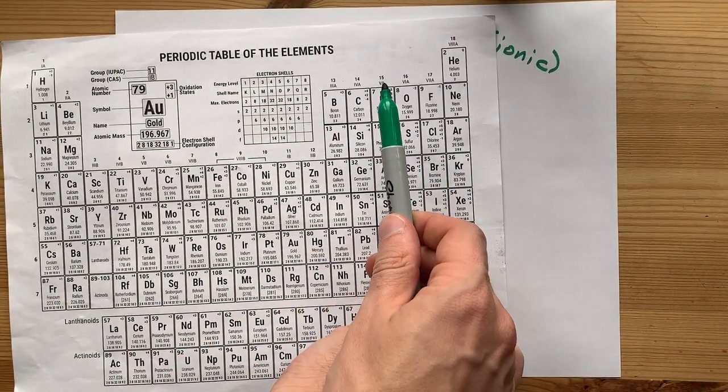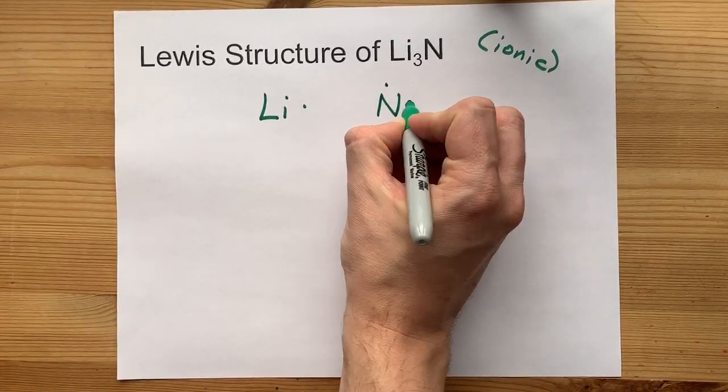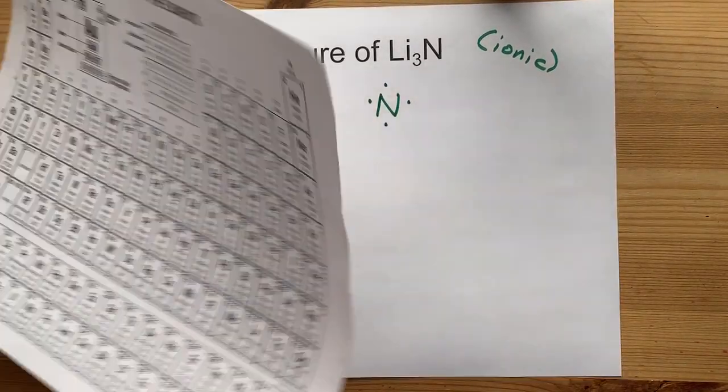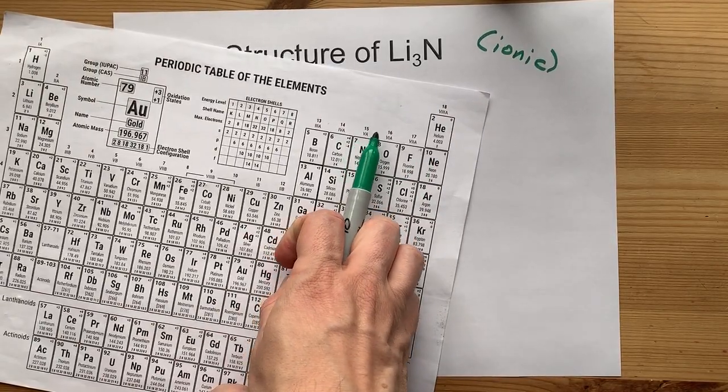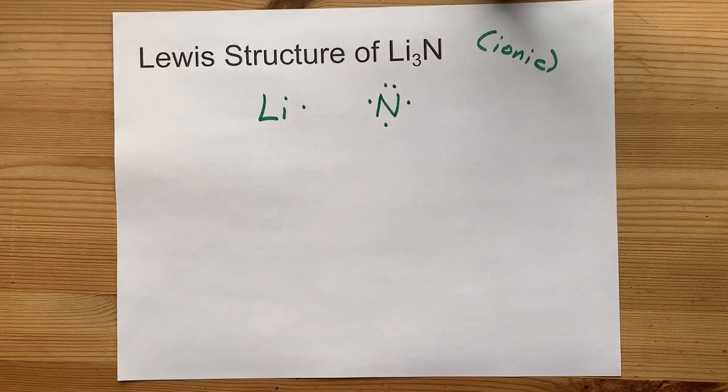Nitrogen is in group 15. The atoms in that group bring five valence electrons with them. See how there's a five there. I know it says 15, but there's five. Five valence electrons.